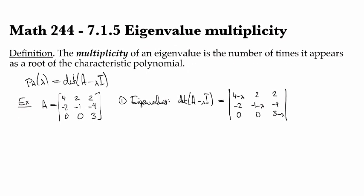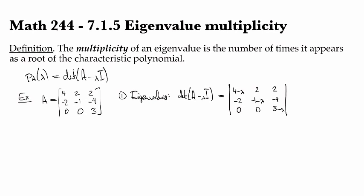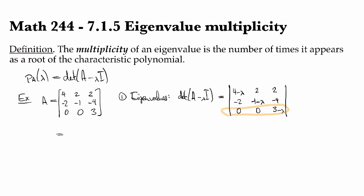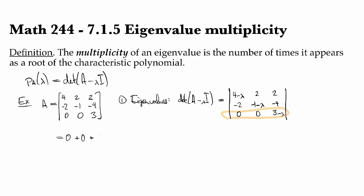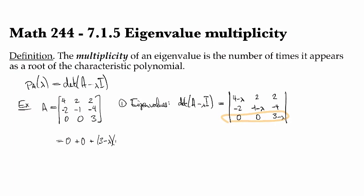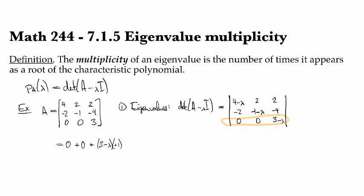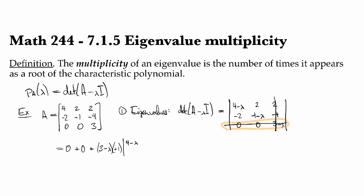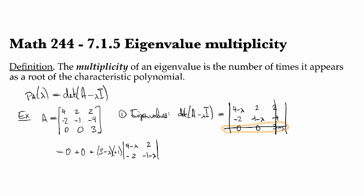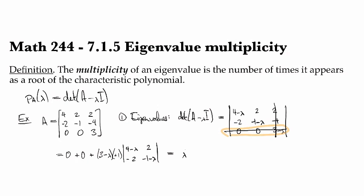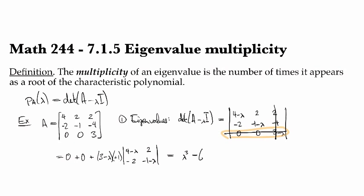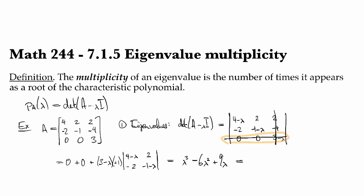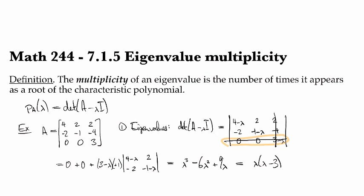I'm going to do this one by cofactors. It looks like the last row is a good one to expand upon because there's those two zeros. So I'm going to have 0 plus 0 plus (3 minus lambda) times, and then the sign for that position is positive 1. If I look at the minor, I'm crossing off that row and column, so I have (4 minus lambda)(2)(-2)(-1 minus lambda), and this is going to give me lambda cubed minus 6 lambda squared plus 9 lambda. I can factor a lambda out of that, and I get lambda times (lambda minus 3) quantity squared.